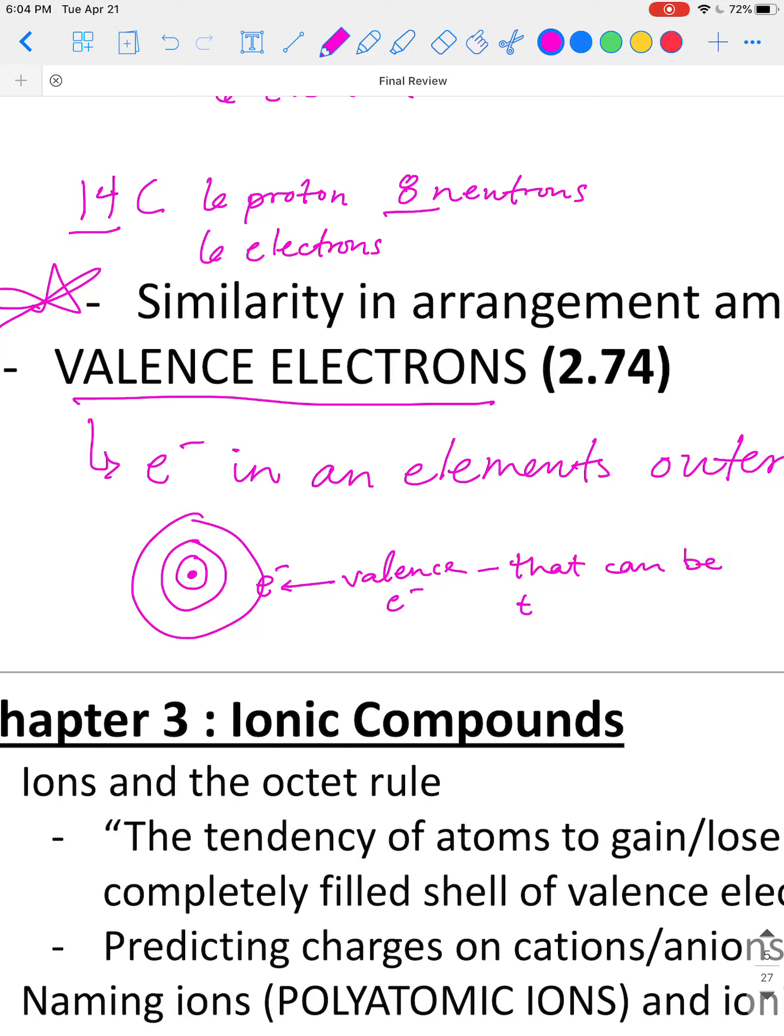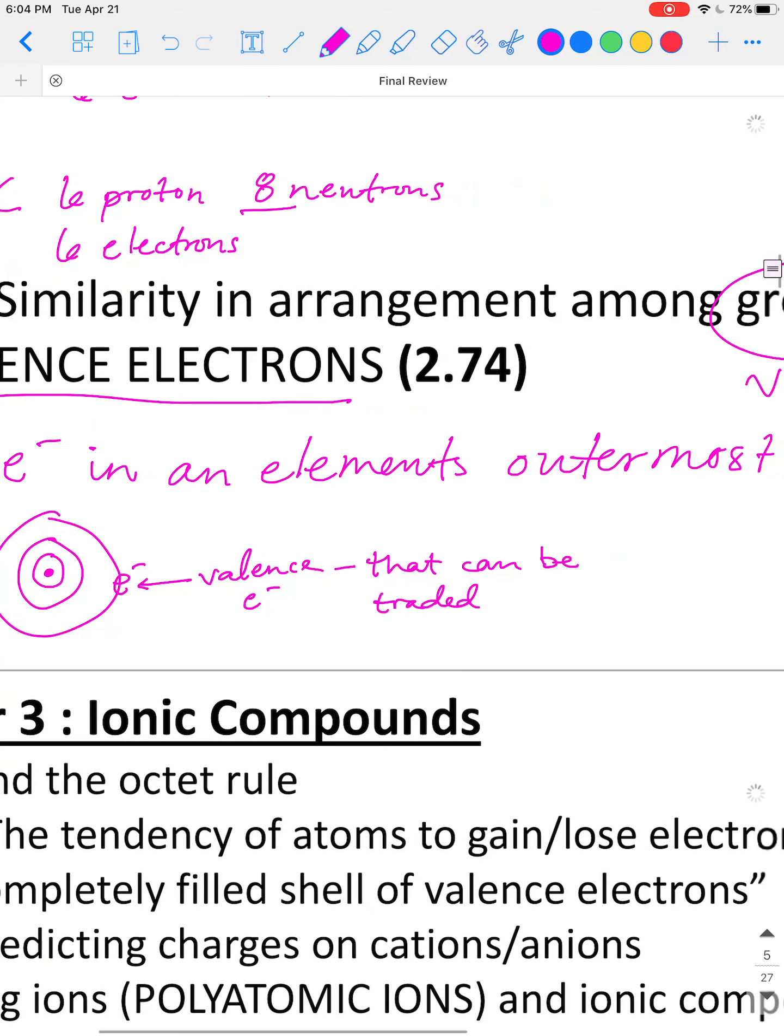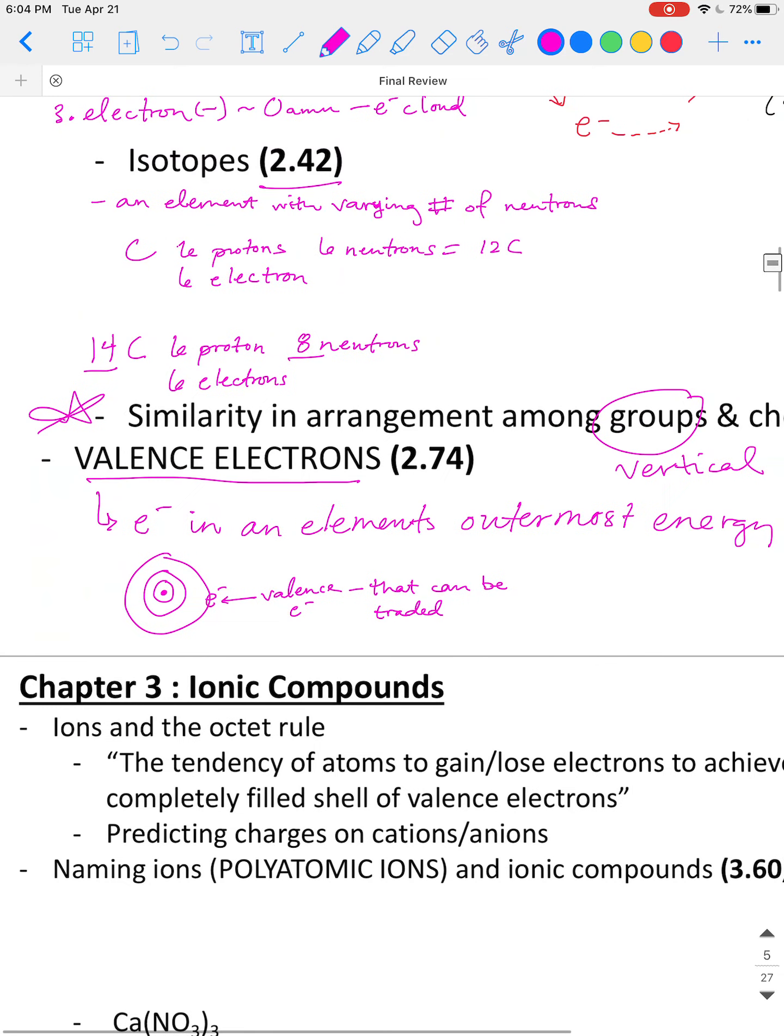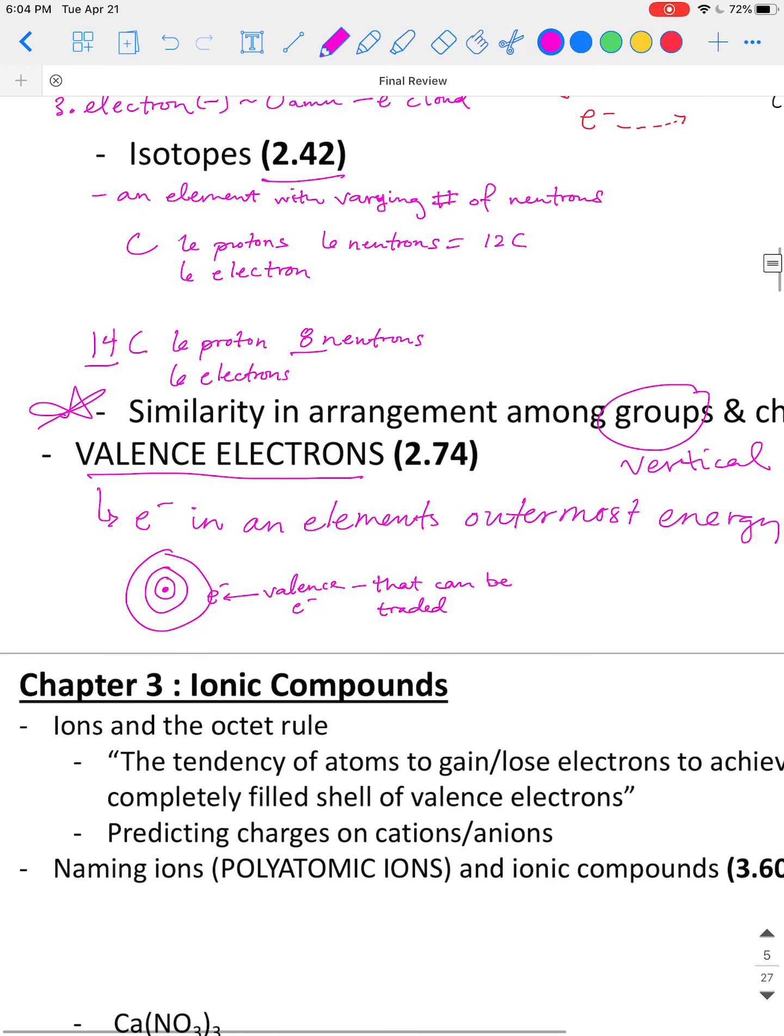These are the electrons that can be traded or given away. So an element will trade valence electrons in order to achieve a more stable state. That is why valence electrons are given away or received so that elements can become more stable.